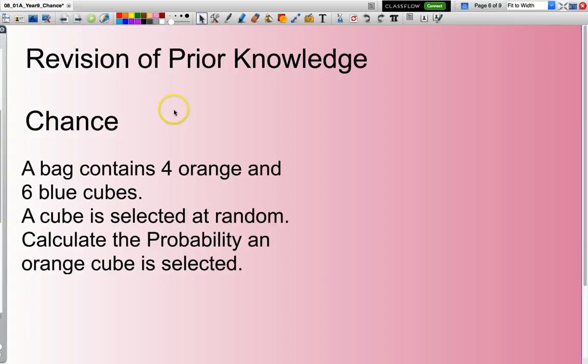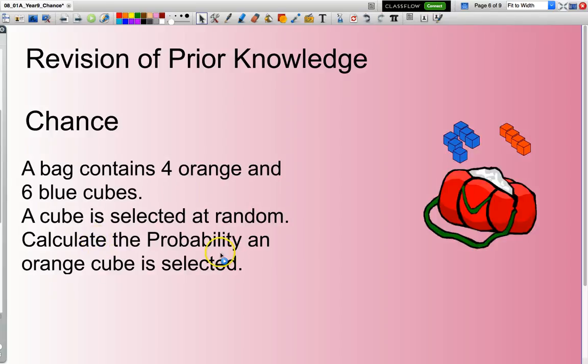So here is a worded question. A bag contains four orange and six blue cubes. A cube is selected at random. So in other words, all those cubes are put in the bag, I close my eyes, put my hand in the bag and select a cube. And the question is asking, calculate the probability an orange cube is selected. So here is a picture here. I have a bag, six blue, four orange. They are placed in the gym bag. Put my hand in, select one at random. What's the probability I will select an orange cube?